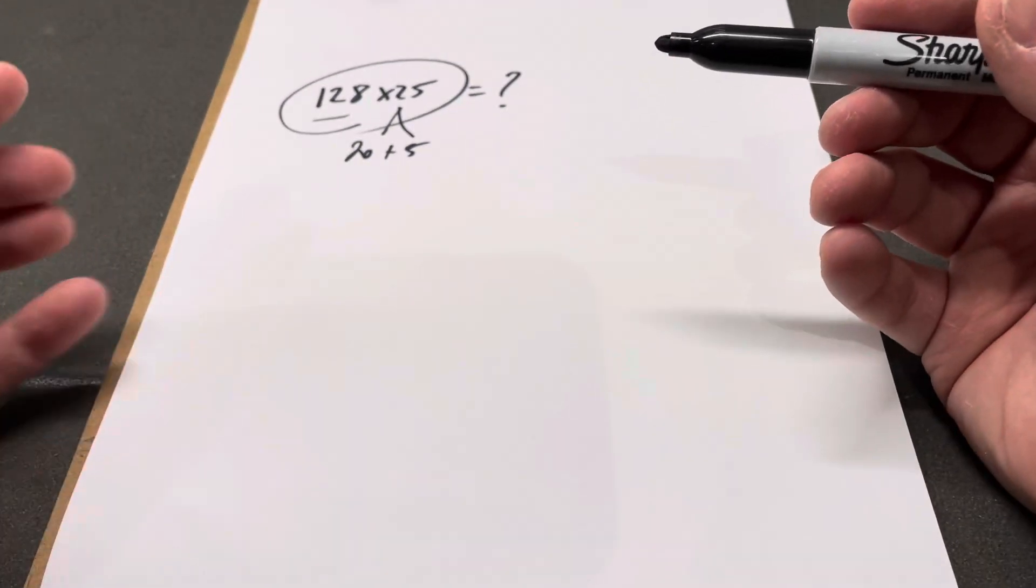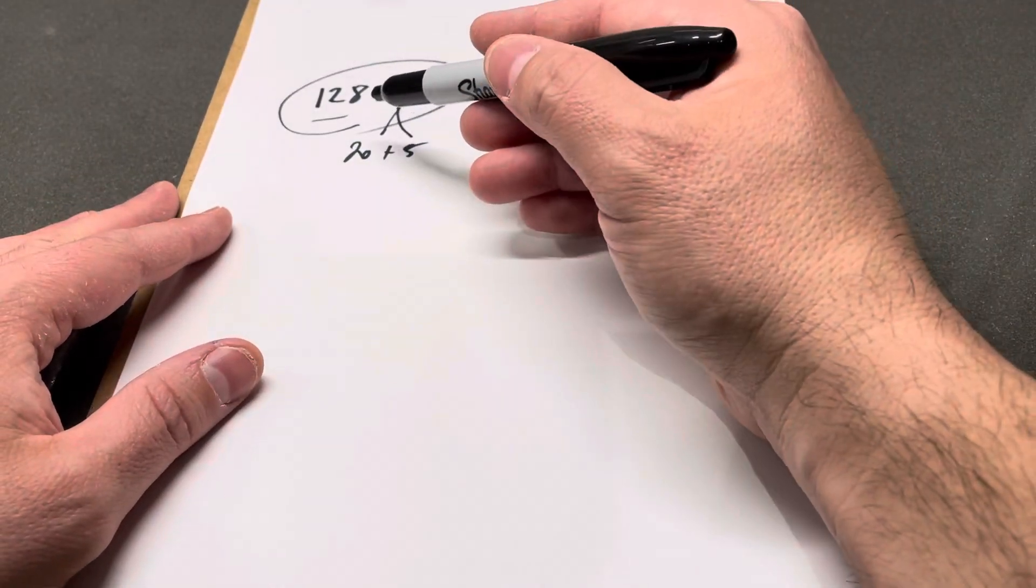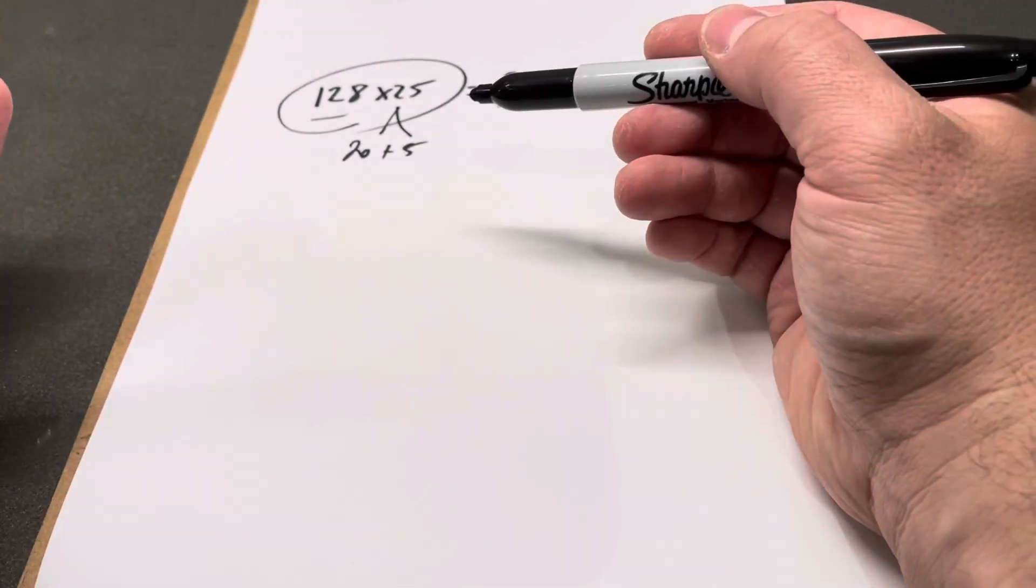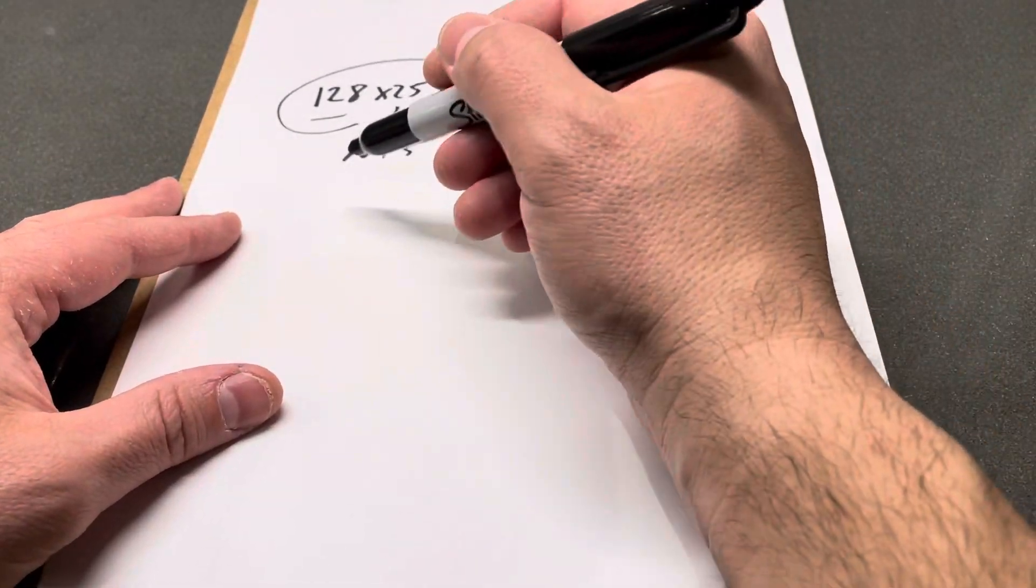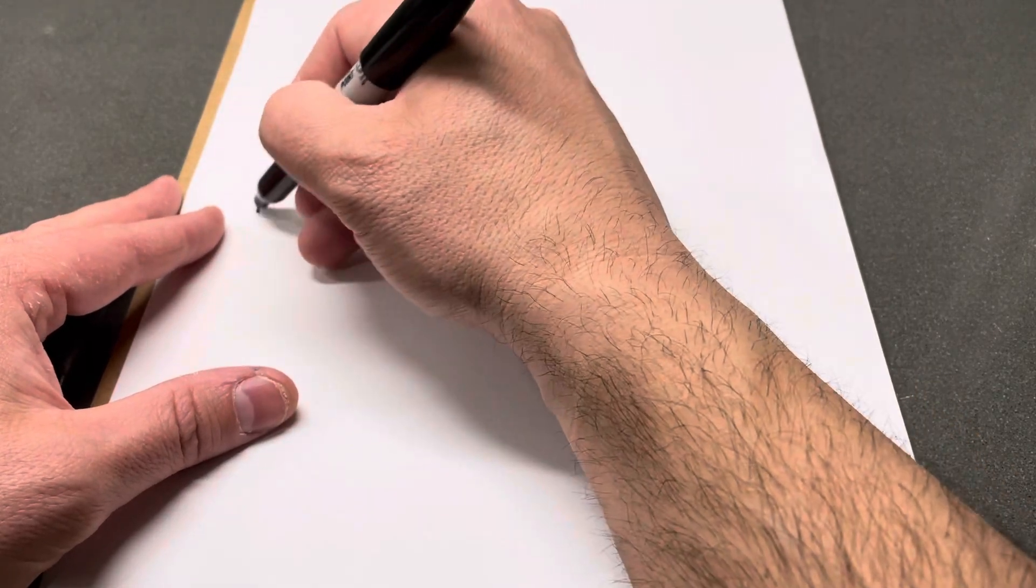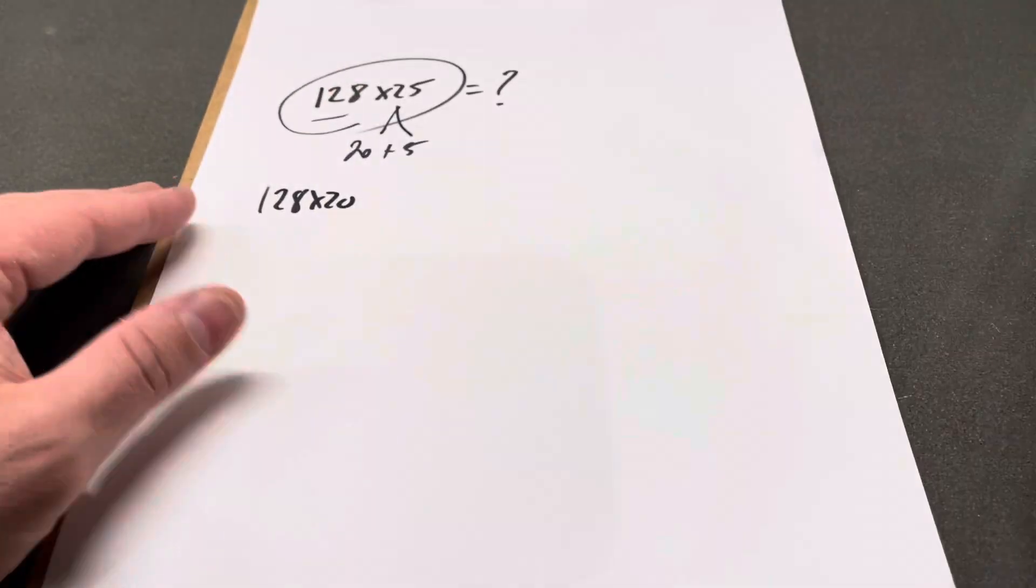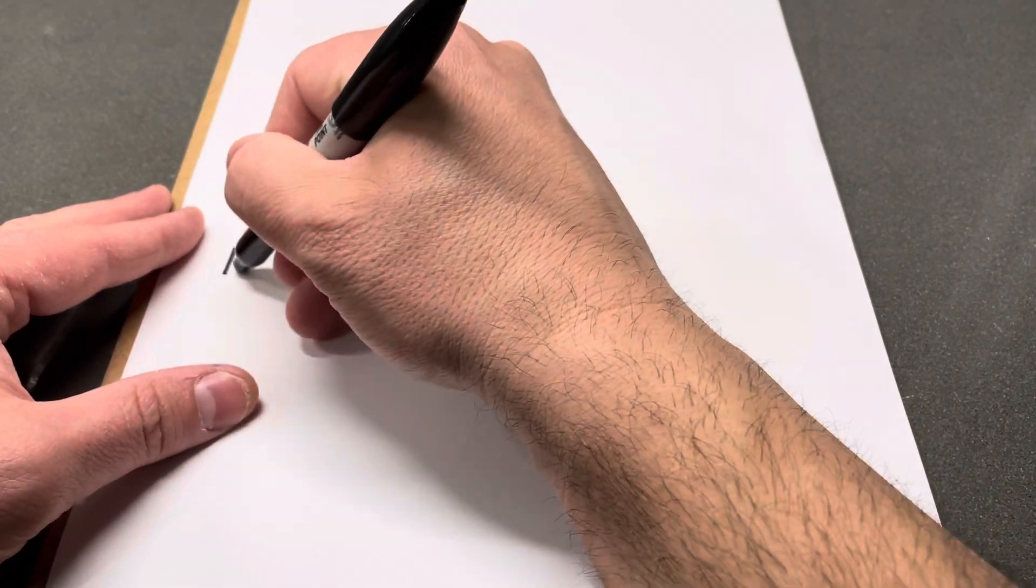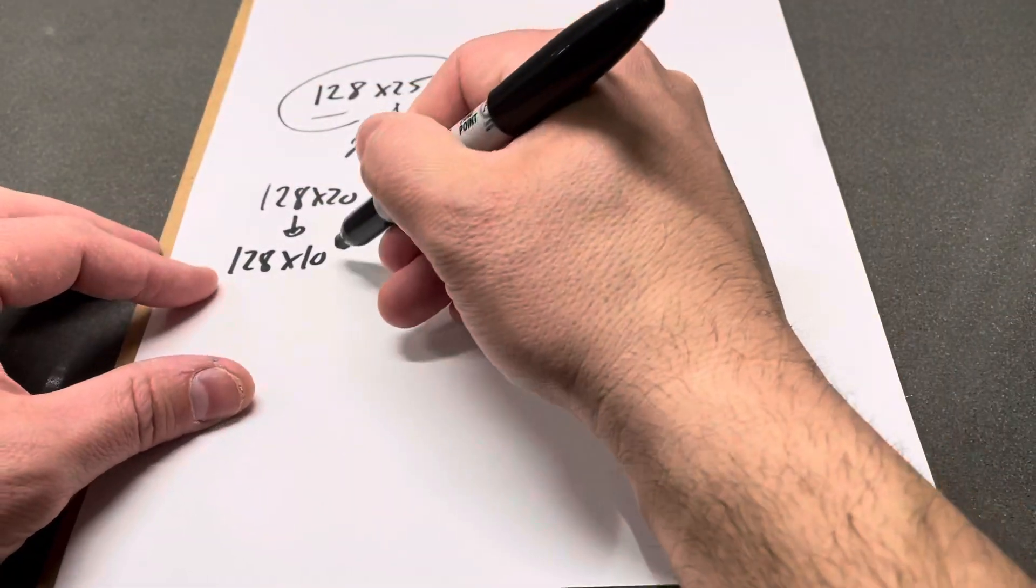This is how I would use some math shortcuts to do this. So 128 times 20 is the first thing we're working with. To do that, I would actually do 128 times 10. Whenever you multiply a number by 10, you rewrite that number and add a zero.